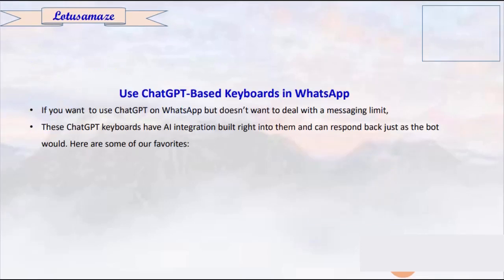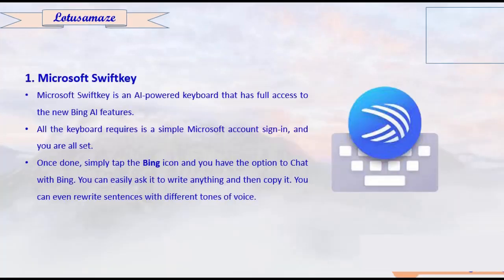If you want to break the messaging limitation, you can use a ChatGPT-based keyboard in WhatsApp. The first option is the Microsoft SwiftKey keyboard. You need to download this app from the Play Store, configure it, and once configured your keyboard will automatically change, allowing you to use it for unlimited messaging.